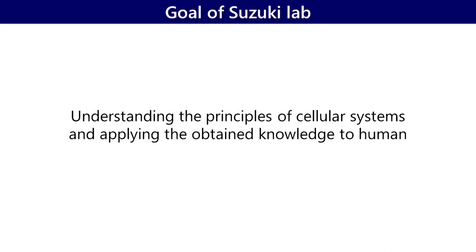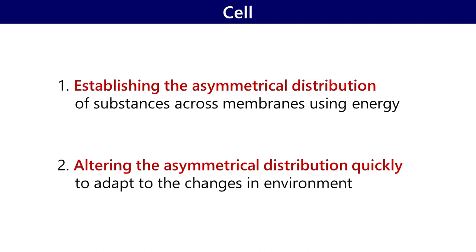The goal of my laboratory is to understand the principle of cellular systems and apply the obtained knowledge to humans. How we see cells is that cells establish the asymmetrical distribution of substances across the membrane, and when environmental changes occur, cells adapt by altering that asymmetrical distribution quickly.